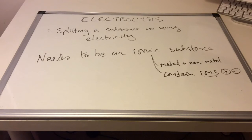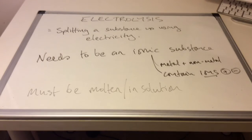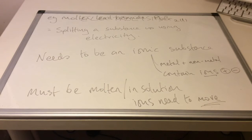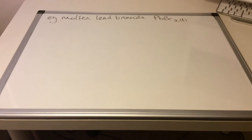And obviously these substances contain ions which are positive and negatively charged particles. The substance being split up has to be molten or in solution and that's because the ions need to be able to move. So the example we're going to look at is the electrolysis of molten lead bromide.